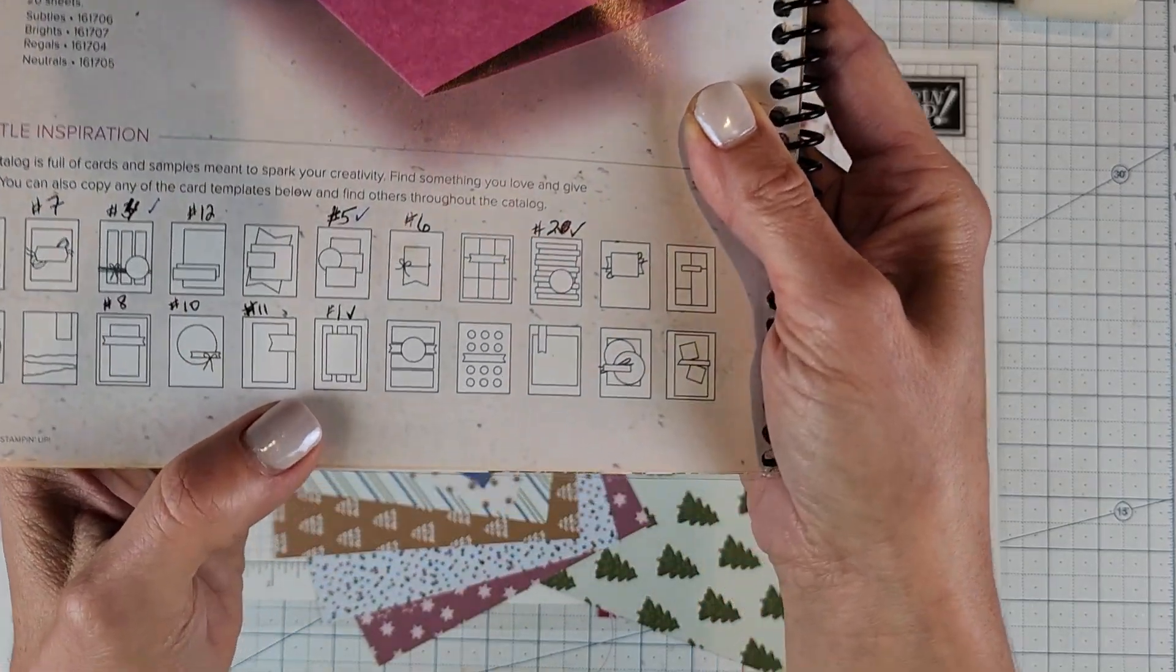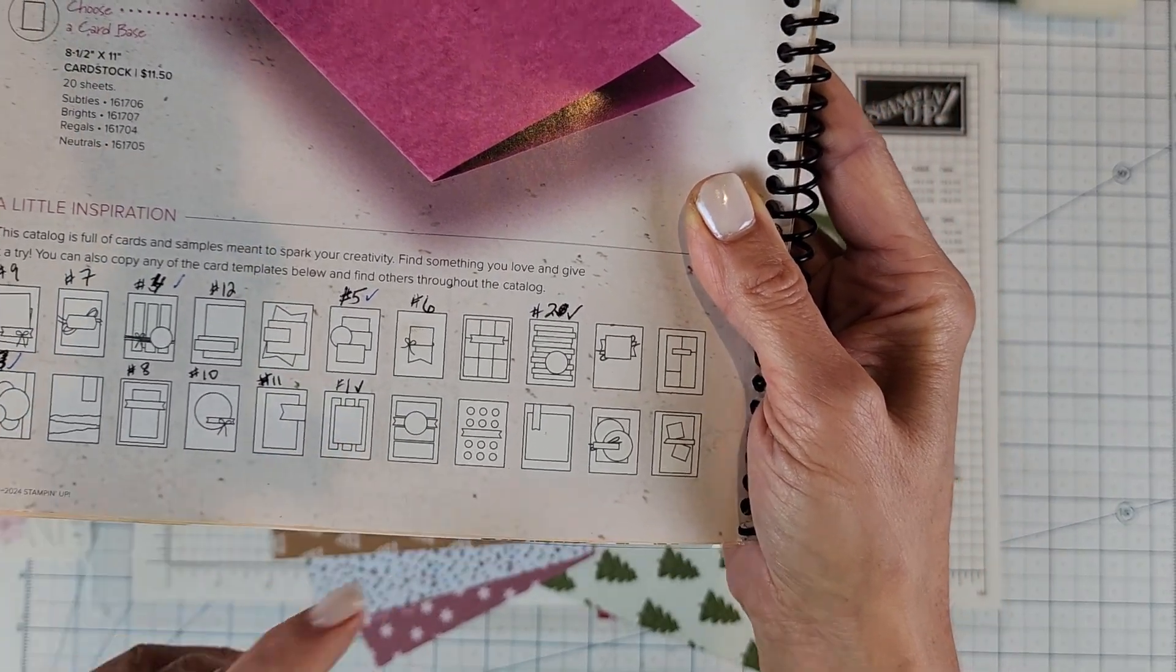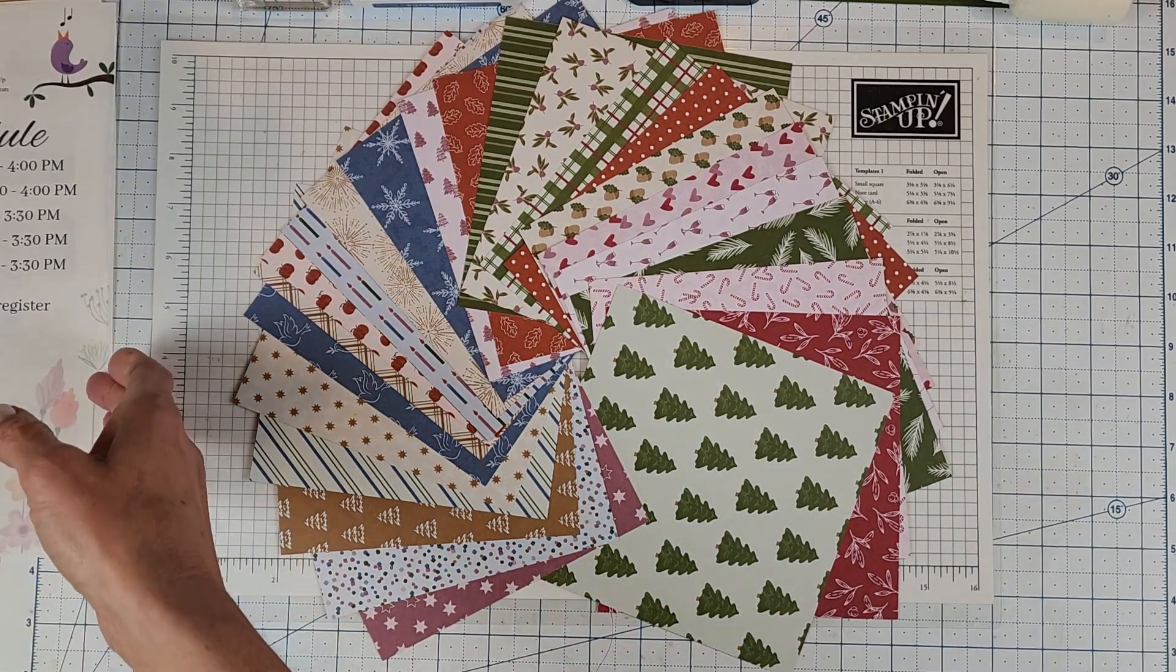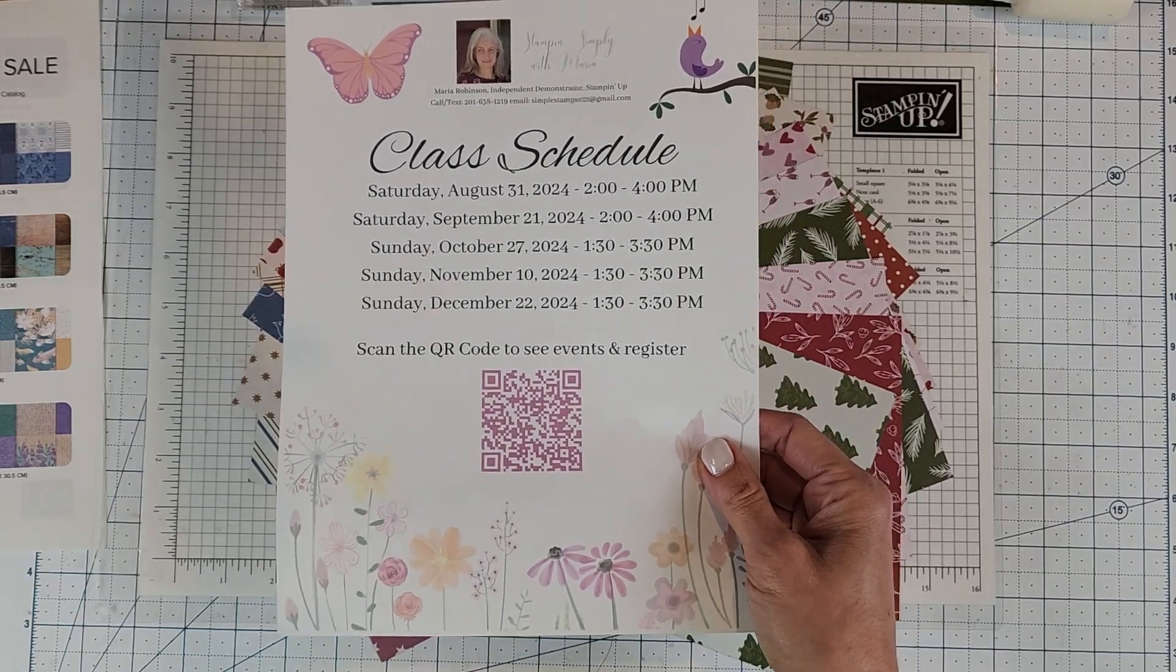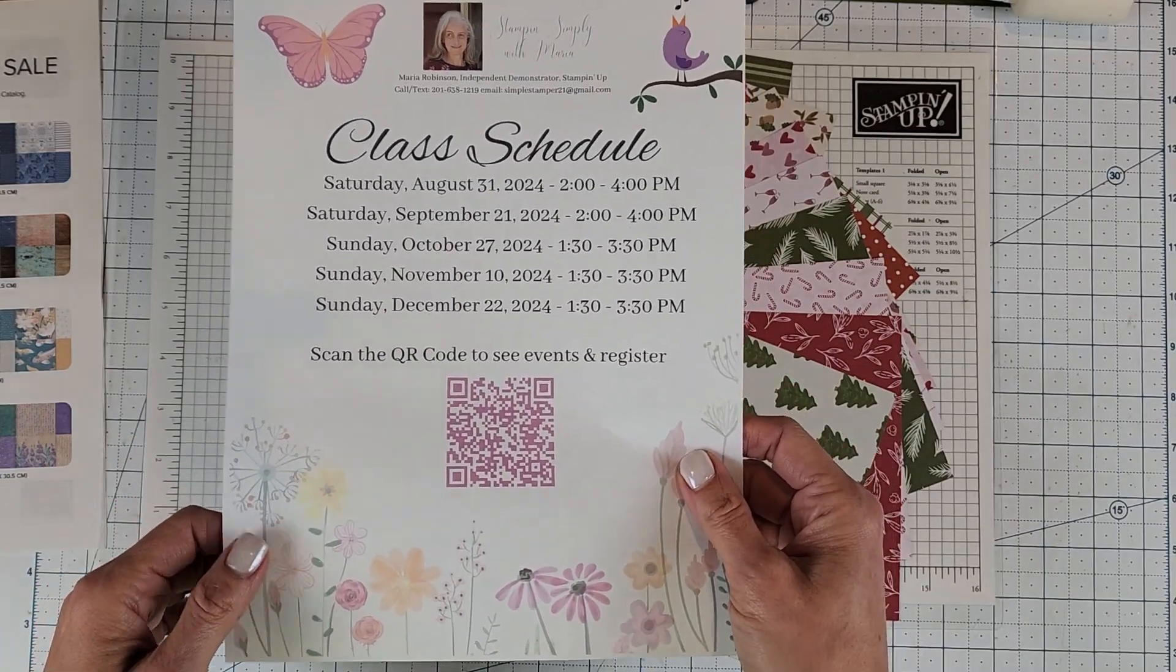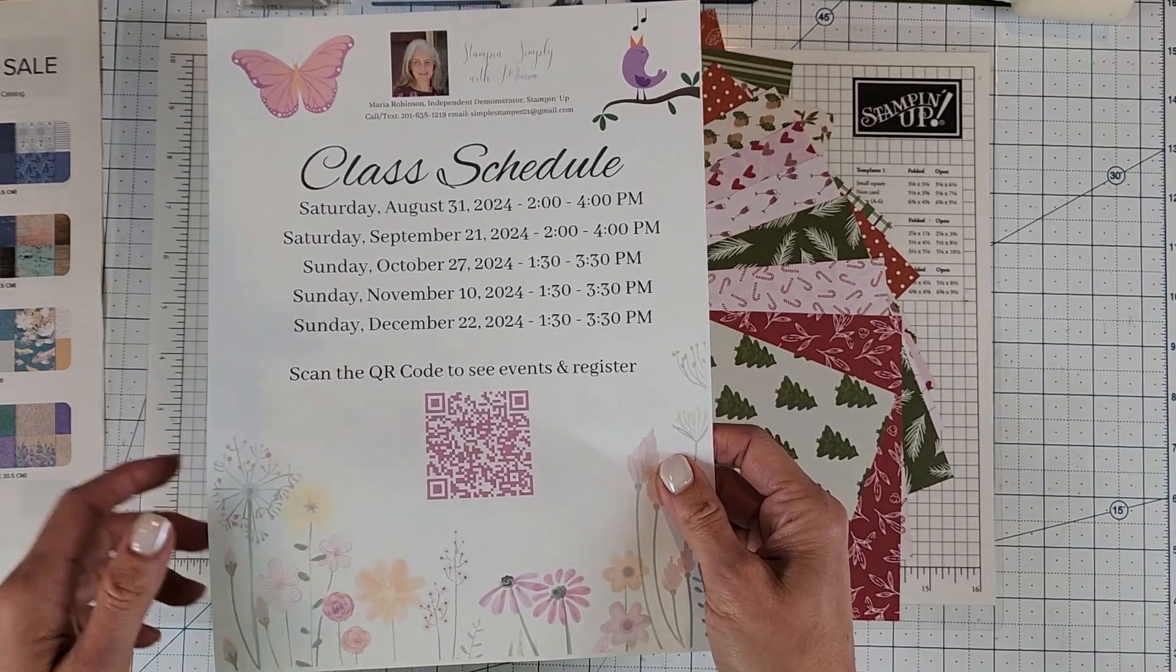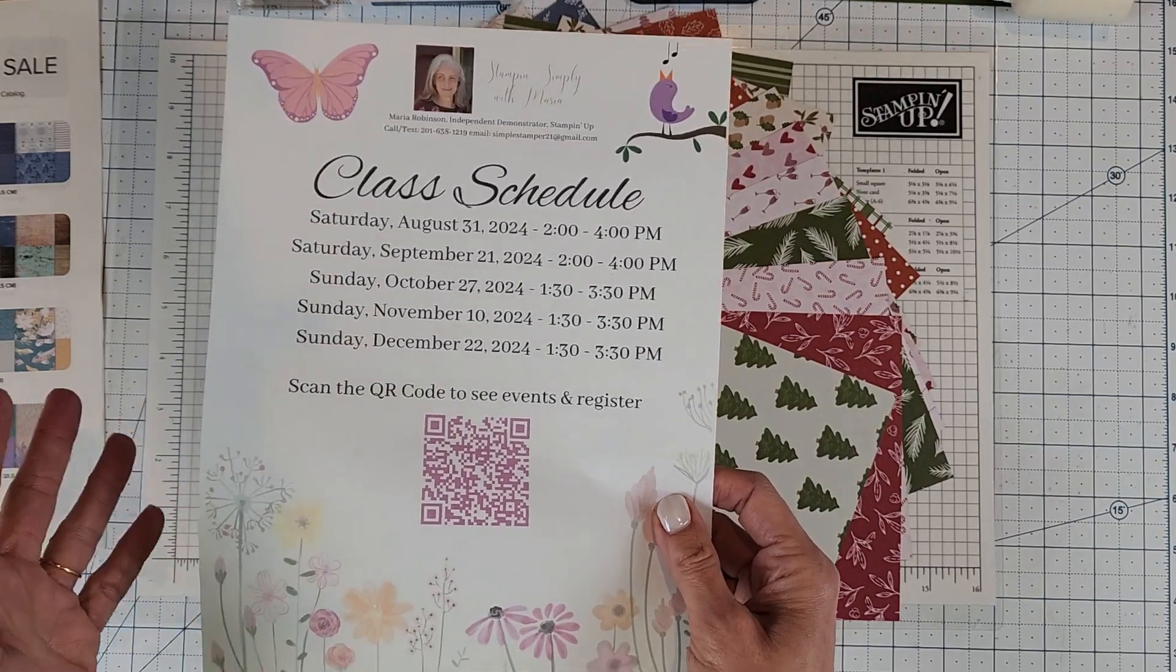We are working on this one right here which I have numbered as number 11. I believe Stampin' Up is calling this number 15 or 16. I haven't been going in any kind of order, just kind of randomly choosing one that I happen to like at the time. I also have my class schedule available if you're in Goshen, New York or any area around Goshen, or maybe you're visiting family for the summer or anytime during the year. I have it up for the rest of the year and you can scan the QR code and register on my website. I'd love to meet you if I've never met you before.